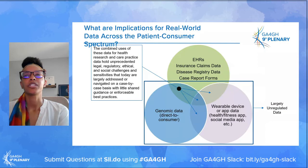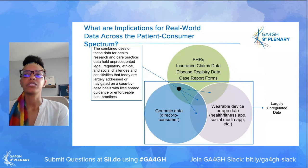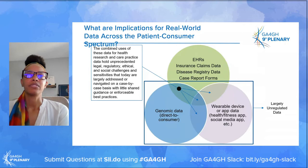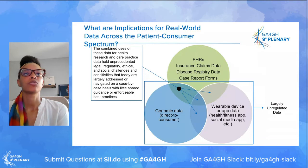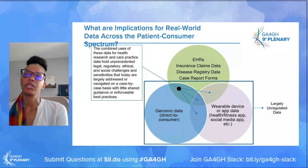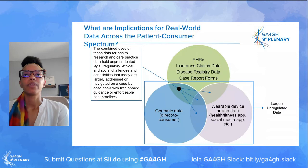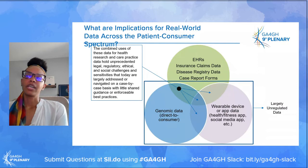What are the implications for real-world data across the patient-consumer spectrum? Combined uses of various data types hold unprecedented legal, regulatory, ethical, and social challenges, as well as sensitivities that are largely addressed on a case-by-case basis rather than on a broad, enforceable policy basis. Right now we see a lot of best practices, but little shared guidance around enforcement — we're at a very early frontier.